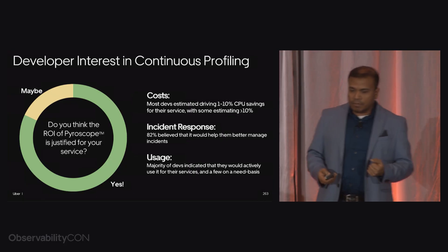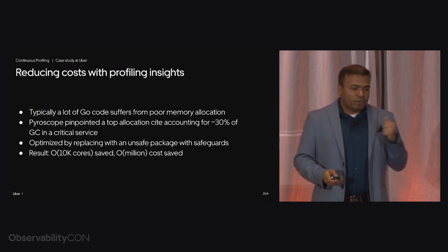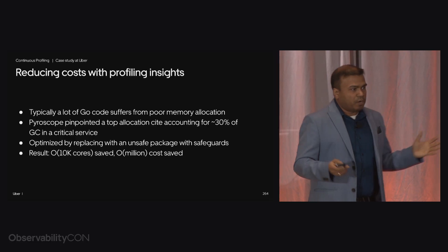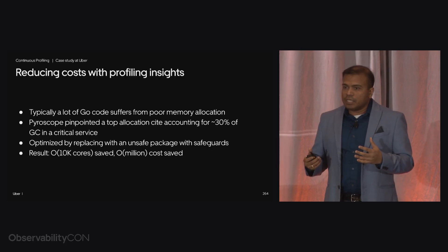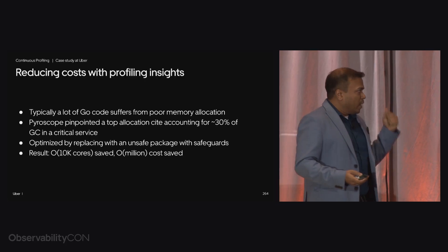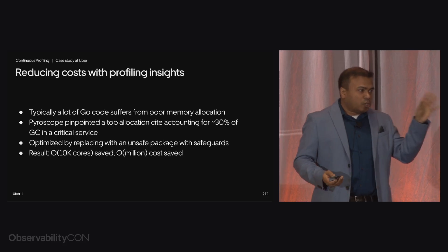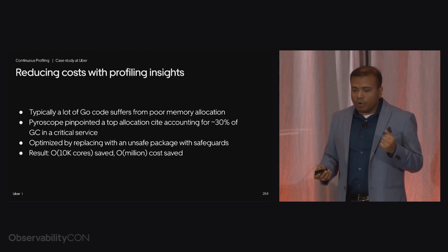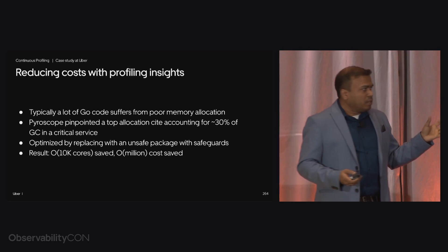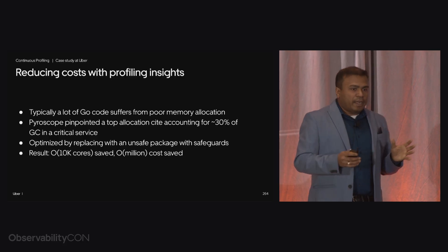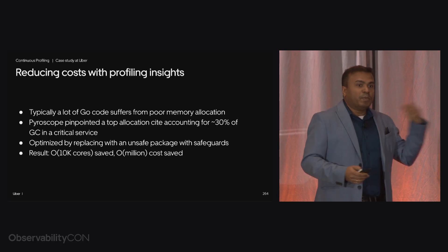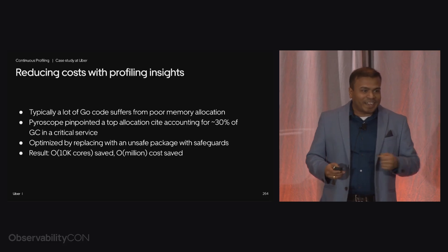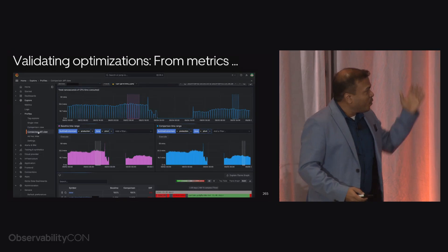The first case study was around reducing cost. A lot of Uber uses Go as a preferred back-end programming language, and Go code typically suffers from poor memory allocation. Pyroscope was able to pinpoint one of the top allocation sites in a back-end service, which was causing 30% of allocation overhead. We optimized this service with an unsafe package with some guardrails, and that helped us save around 10,000 cores — which is in the order of millions of dollars saved. After an optimization goes in, you still need to measure performance and make sure it's doing what it's supposed to do.